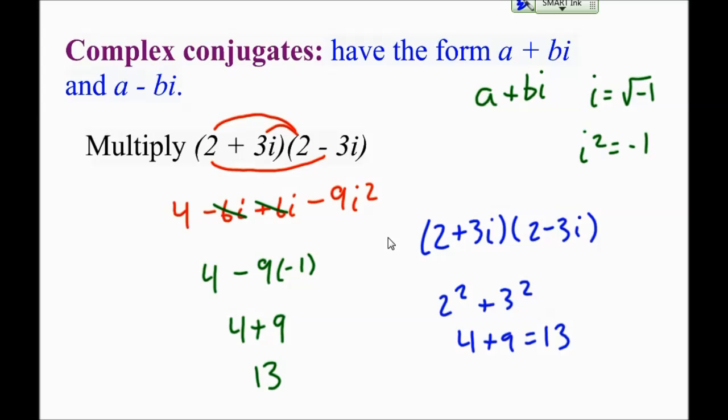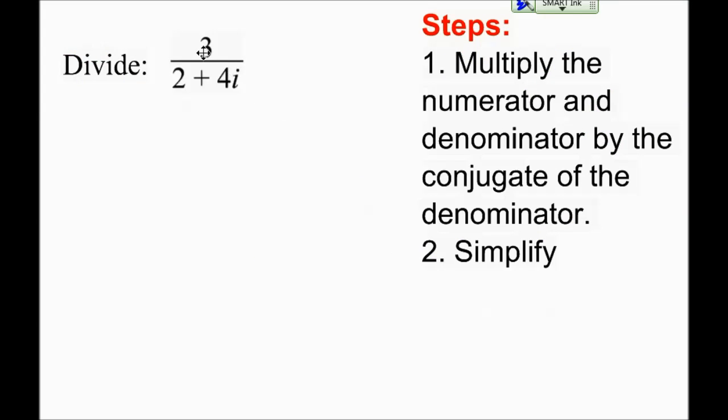Now, let's use them for dividing. So here's what we're going to do. We're going to divide 3 by 2 plus 4i. First of all, write it like this. And there are two steps to do. What you're going to do is you're going to multiply the numerator and the denominator by the conjugate of the denominator. And then part 2, you just simplify it.